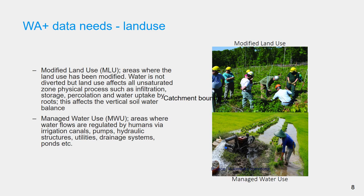Managed water use represents the land use class in which the natural water cycle is manipulated by physical infrastructure. Water is intentionally retained, withdrawn, pumped, or diverted and used for certain objectives. Examples are drinking water supply schemes, irrigation systems, storage for hydropower, maintaining water levels for navigation, flood storage in wetlands, etc. Managed water use includes domestic water use in urban areas and villages, and irrigated agriculture.